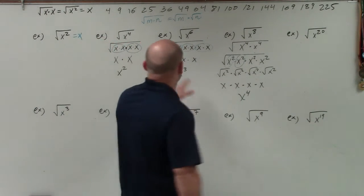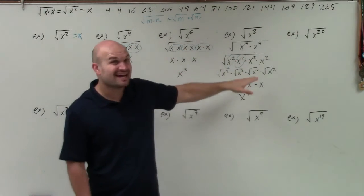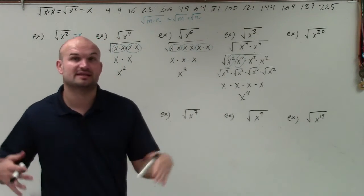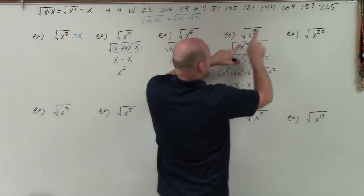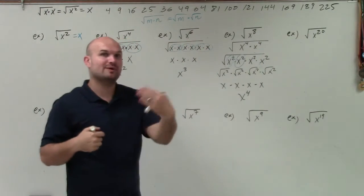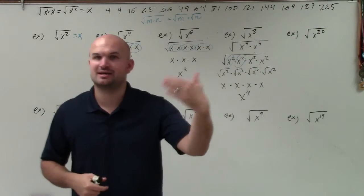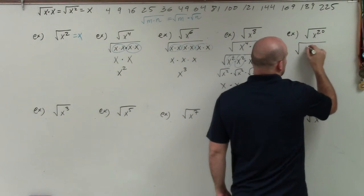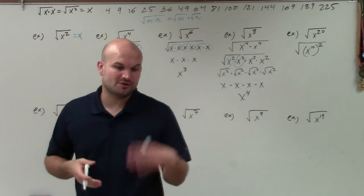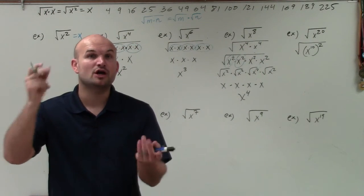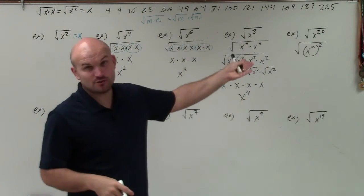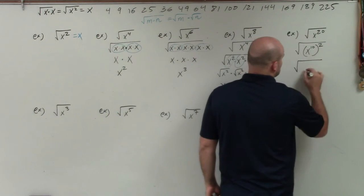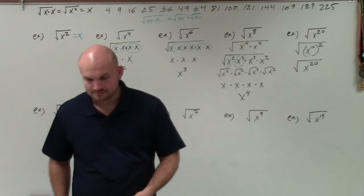Next is x to the 20th. I don't want to use prime factorization or write out x squared ten times — that's too much work. So we use the power rule instead. Rather than breaking up x to the 20th as a product of exponents we add, let's rewrite it as a power raised to another power — specifically, raised to 2. I can rewrite this as x to the 10th, squared, because the power rule says you multiply the exponents: x to the 10th squared equals x to the 2 times 10, which is 20. So the square root of x to the 20th equals x to the 10th.